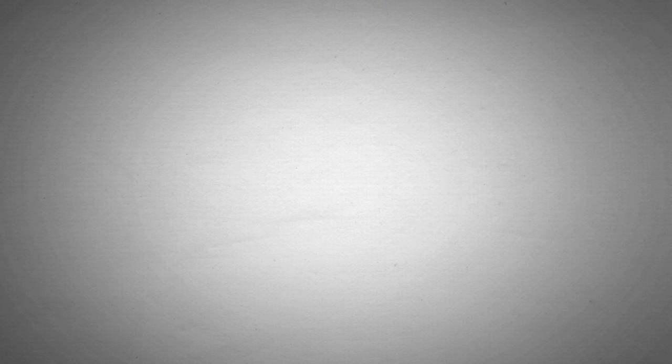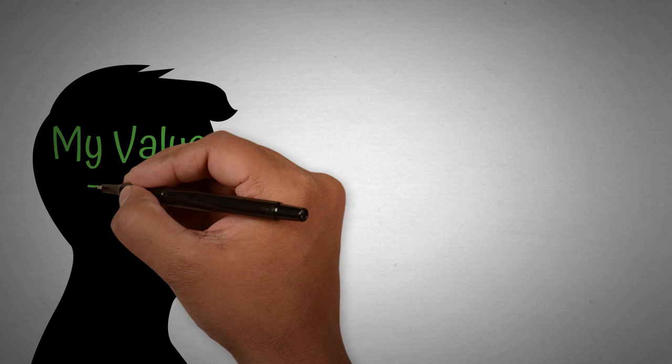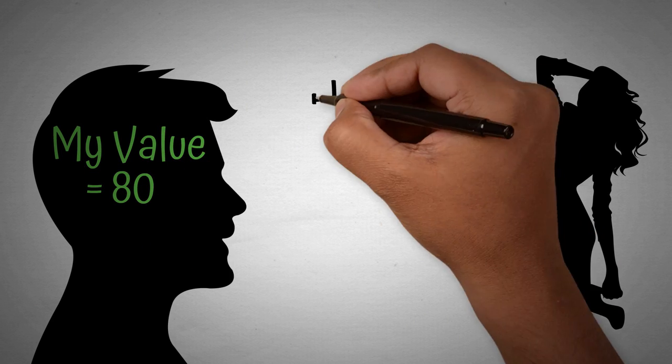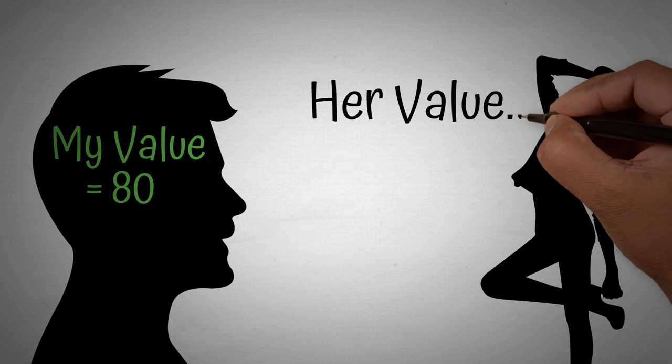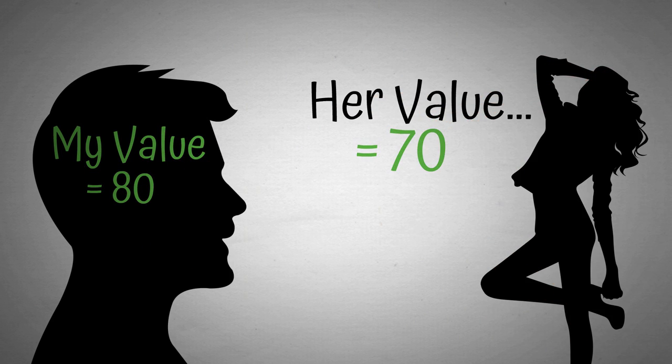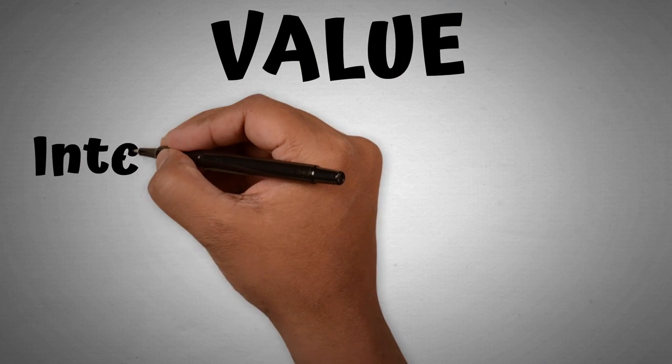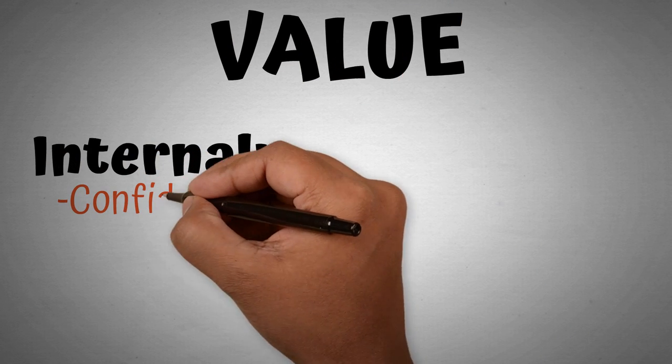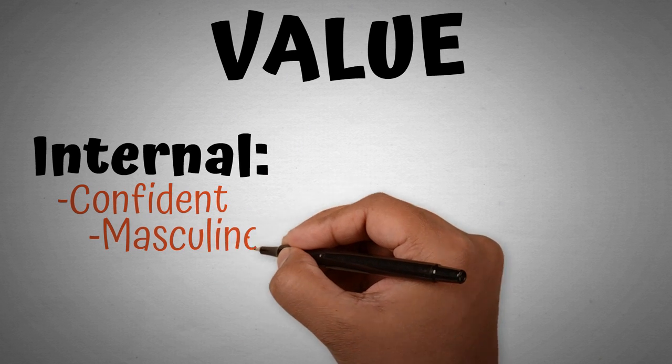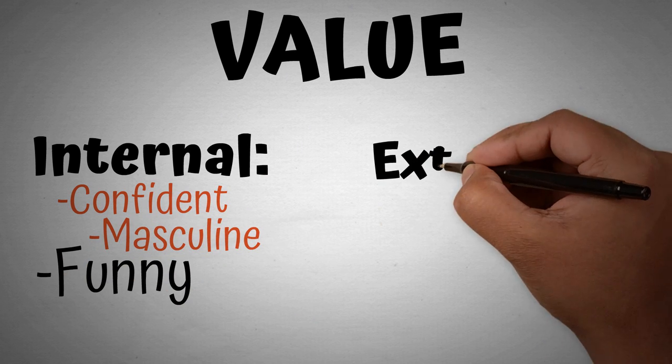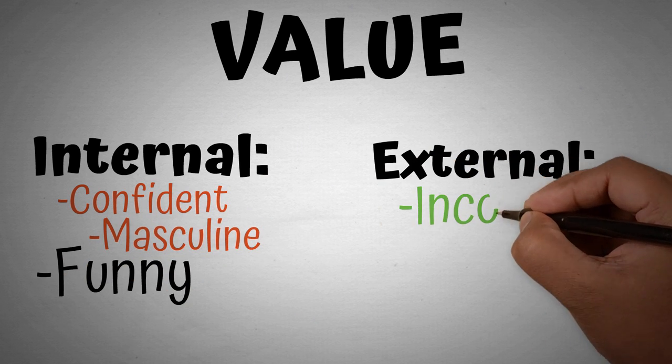Now men on the other hand, we will typically do the opposite, which means that we will typically look for mates or girls who are of a slightly lower value than our own. So you might be asking yourself what exactly is value? Value when it comes to mate selection is first and foremost things like how confident you are, how masculine you are, how funny you are, and secondary to that it's things like how much money you make, how much social status you have, and so on and so forth.